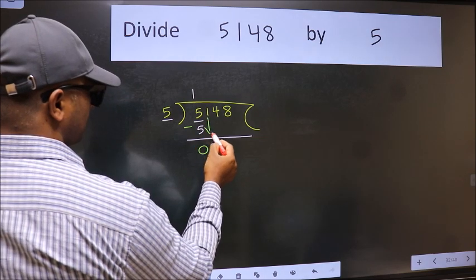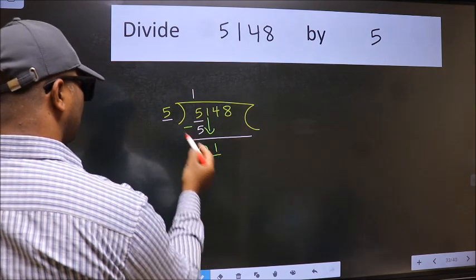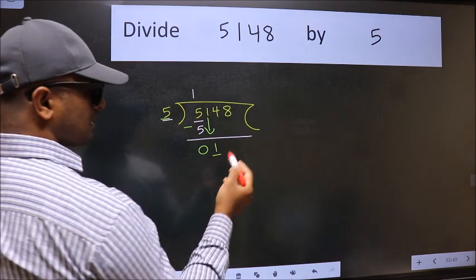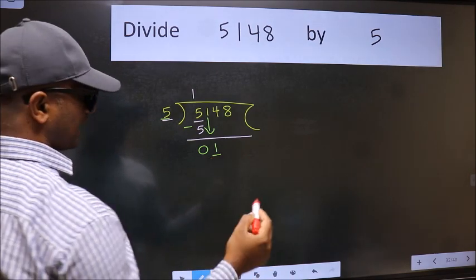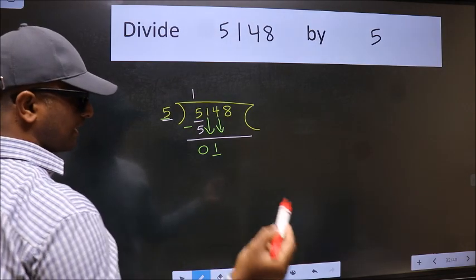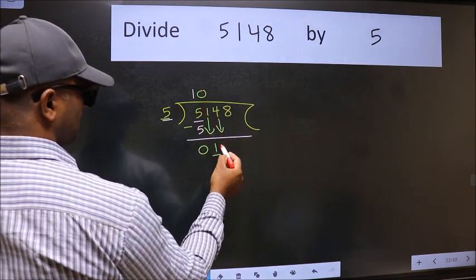After this, bring down the beside number. So 1 down. Now here we have 1 and here 5. 1 is smaller than 5. So we should bring down the second number. And the rule to bring down the second number is put 0 here. Then only we can bring this number down.